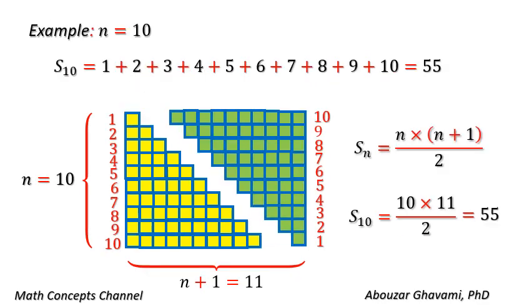As an example, let us consider n equal to 10. Sn equals 1 plus 2 plus 3, up to plus 9 plus 10, that is equal to 55.